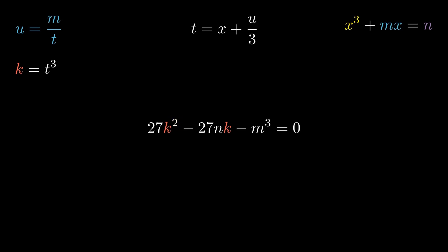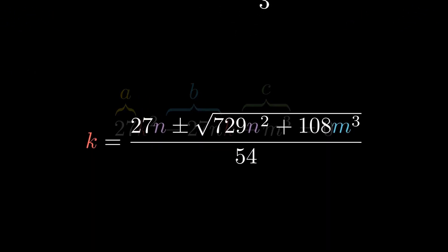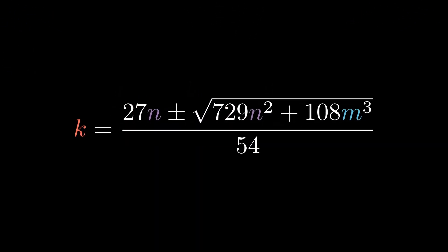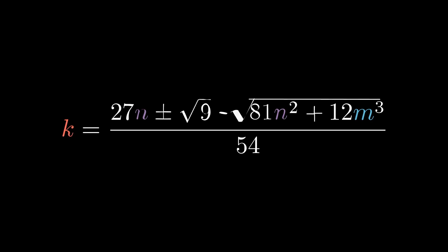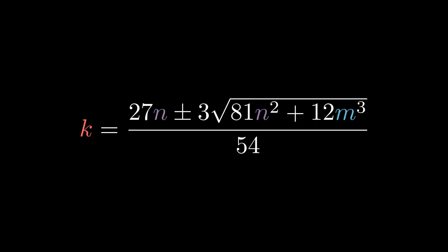We can therefore solve for k by using the quadratic formula, which we looked at in the previous video. Here, 27 will be the a, -27n is the b, and -m³ is c. Plugging the values into the formula will give us this solution. What we can do now is to simplify the expression as much as possible. We start by factoring out 9 in the square root term and rewrite the expression. Then, we can divide both the numerator and denominator by 3 to simplify further.